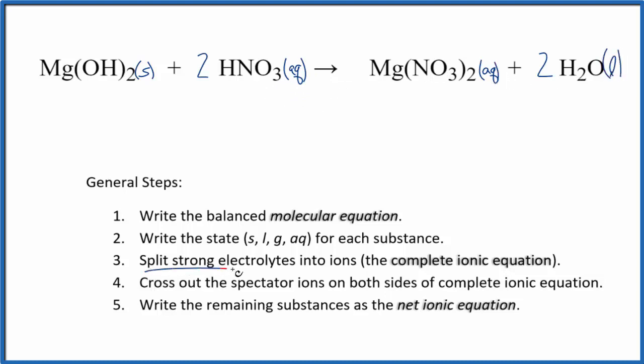So we have the states and now we can split the strong electrolytes into their ions and that'll be the complete ionic equation. We can't split magnesium hydroxide apart into its ions. It's a solid. It's not dissolved. So we're just going to write Mg(OH)2. That's our magnesium hydroxide and I won't write the states now. I'll do that at the end.